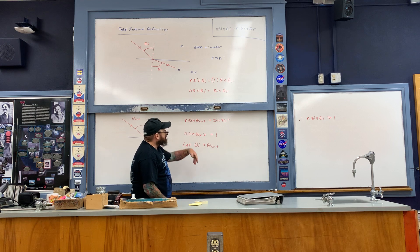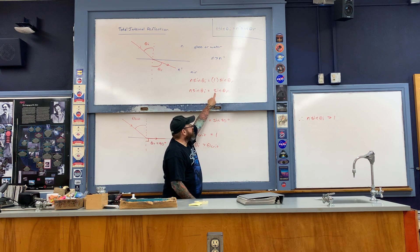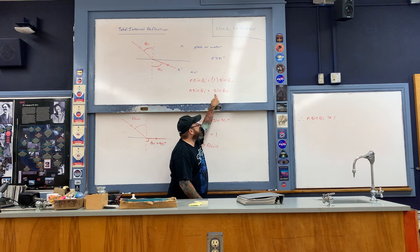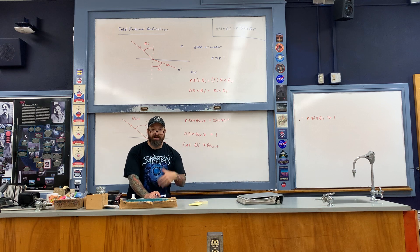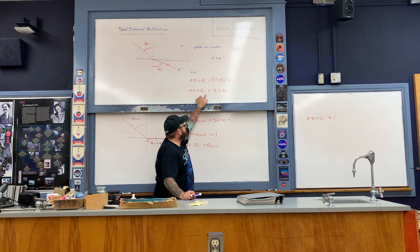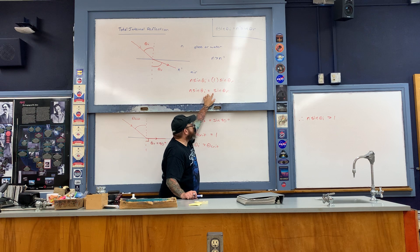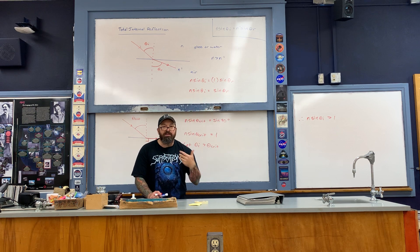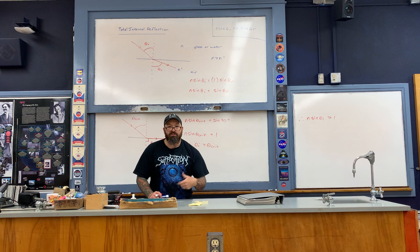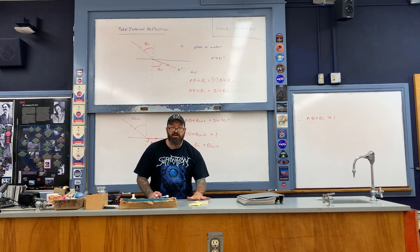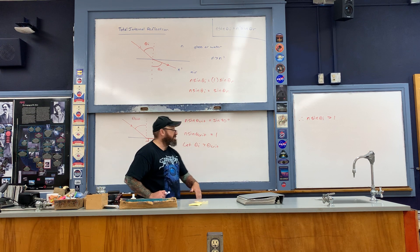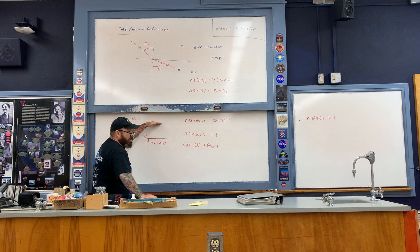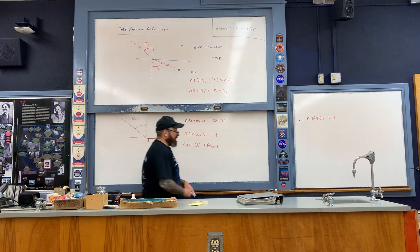Recall that the largest value the sine of any angle can be is one. So the right-hand side of Snell's law would need to be greater than one — but that's impossible. Therefore the refracted angle simply doesn't exist, meaning none of the light refracts from the water or glass into the air.